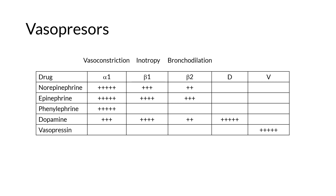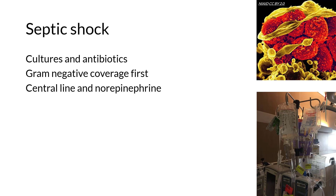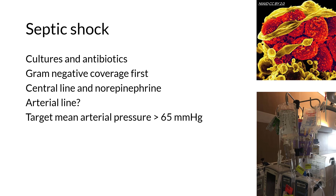Vasopressin is sometimes used as an adjunct in septic shock, and can also be used to manage blood pressure in patients fresh out from open-heart surgery. It's important to obtain cultures and start antibiotics as soon as possible in septic shock, as delays in antibiotic therapy result in time-dependent increases in mortality rates. In general, when using multiple antibiotics, it's best to start with gram-negative coverage. If shock is not fully resolved with the initial fluid bolus, a central line should be placed and norepinephrine should be started. This may require placement of an arterial line to monitor blood pressure. The target mean arterial blood pressure should be above 65 mmHg.